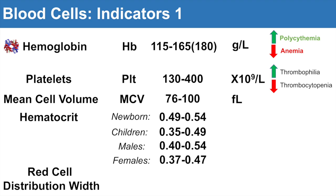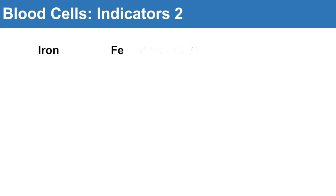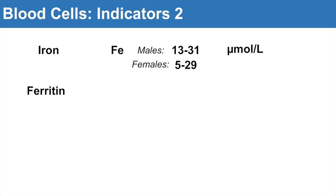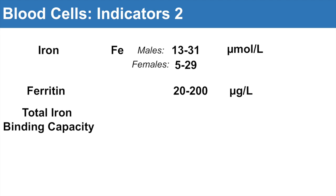Another indicator is red cell distribution width, or RDW — the distribution from the smallest to the biggest size red blood cell. The range is about 11.5 to 14.5 percent. Other indicators include iron, with different levels for males and females, measured in micromoles per liter. Ferritin, the storage form of iron, has a wide range of 20 to 200 micrograms per liter. Total iron binding capacity, or TIBC, has a typical range of 45 to 73 micromoles per liter.